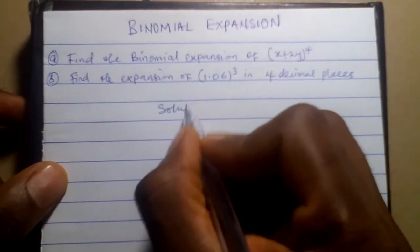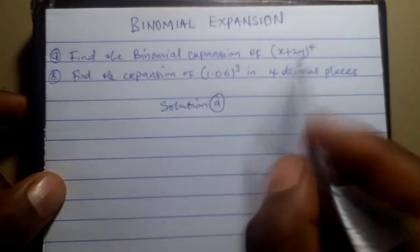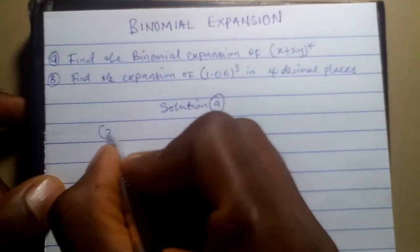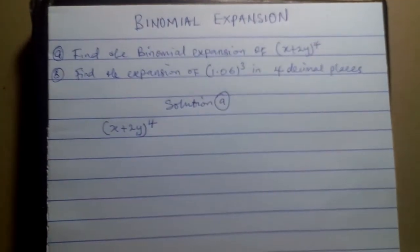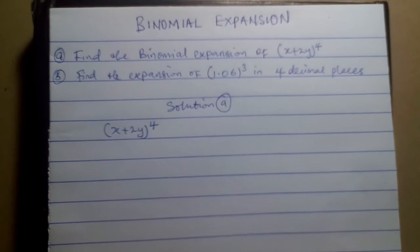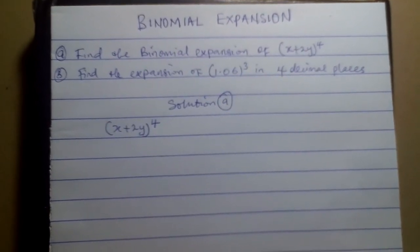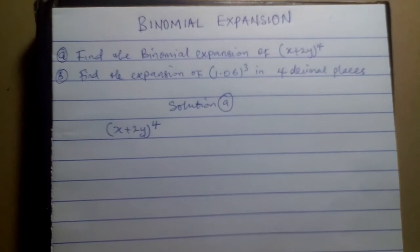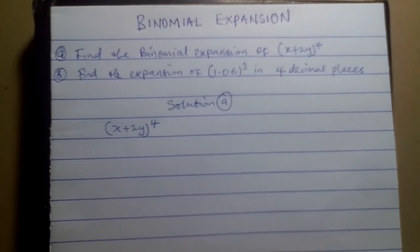Let's start with the first question — Solution A. We have to find the binomial expansion of x plus 2y raised to 4. Whenever you are finding binomial expansion of any given expression, please make use of the combinatorial method — that is, taking a combination of different terms. Combination means selection of terms.